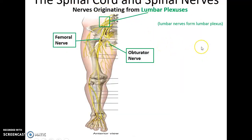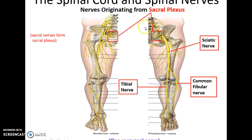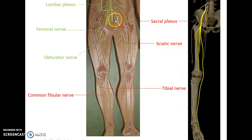The lumbar plexus is found in the lower part of the body and is made up of lumbar nerves. Two main nerves that come off of it are the femoral nerve and the obturator nerve, innervating structures of the lower limbs. There is also a sacral plexus formed by sacral nerves. These plexuses form the sciatic nerve, the largest nerve of the body, innervating the lower limbs especially the posterior side. The sciatic nerve splits toward the lower leg into the common fibular nerve going laterally and the tibial nerve.